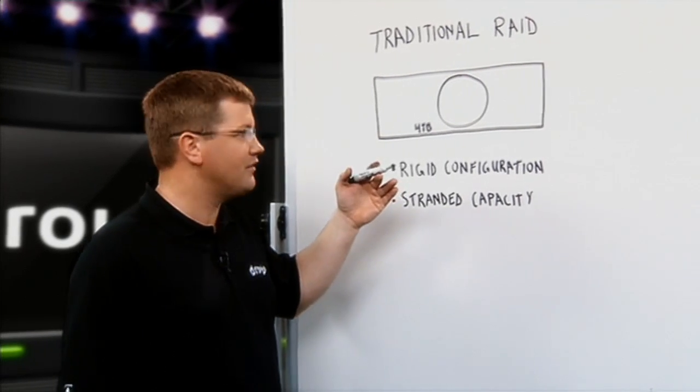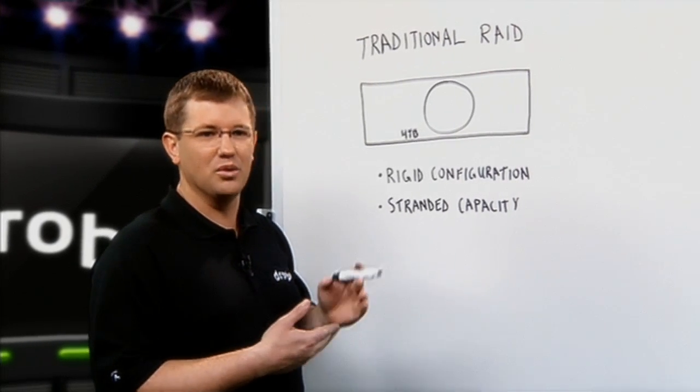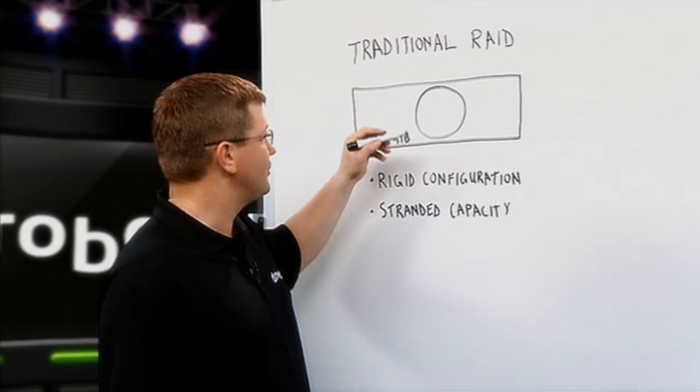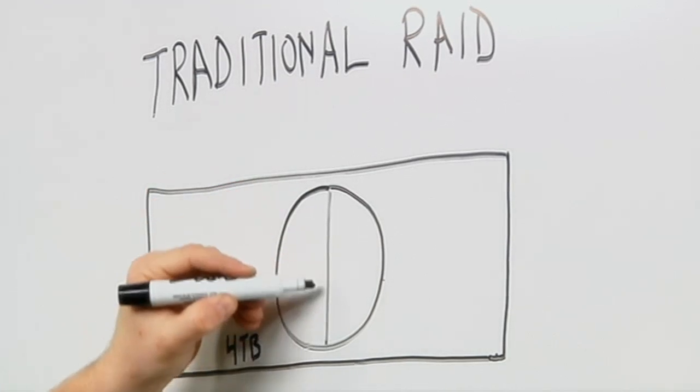And the next step after you've configured your disk pools and set up your RAID groups is you then have to create volumes and allocate them to servers. So in this example, we're going to create three volumes.